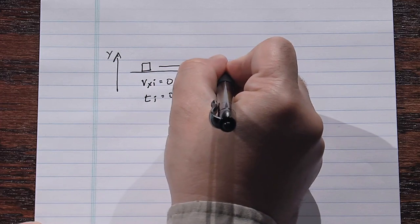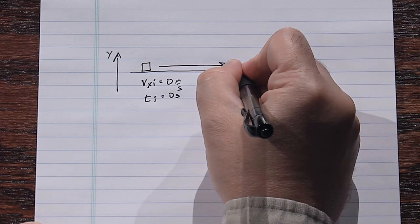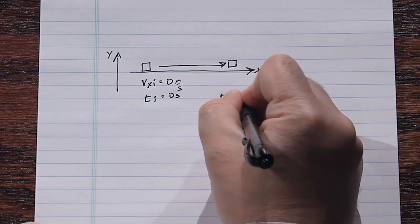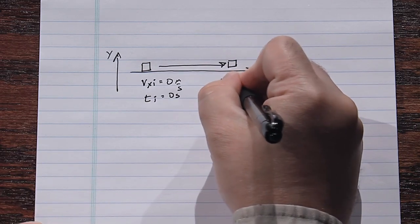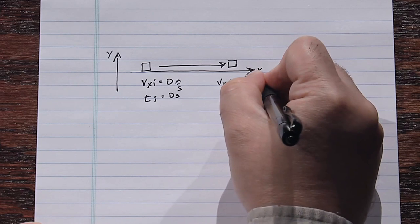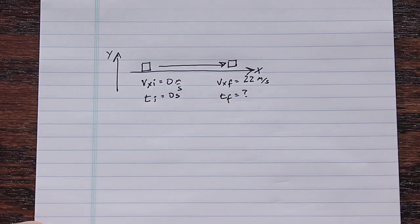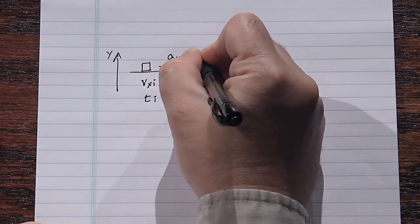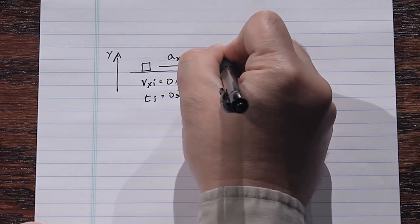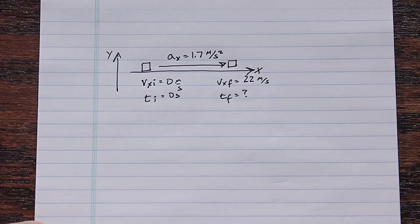Then the antelope accelerates. At some later time, t_final is what we're looking for. vx_final equals 22 meters per second. In the meantime, the antelope was accelerating in the x-direction at 1.7 m/s². Your choice of axes is up to you — for convenience I chose the straight line of acceleration as the x-axis. We've now extracted all information from the problem statement.